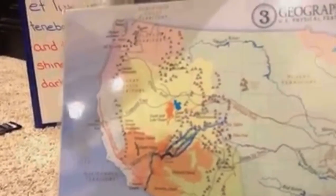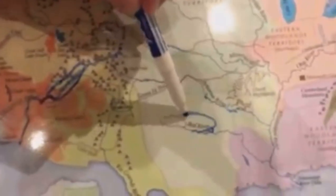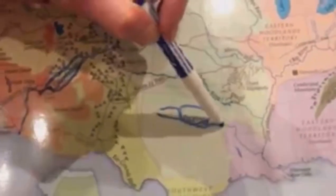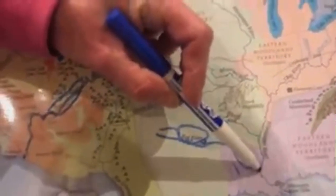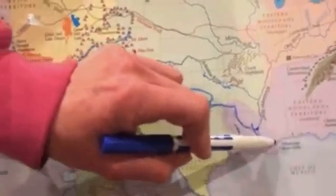Next up, we're going to find the Red River. Here is the Red River — it goes right this way down here, and it meets up at the Mississippi River. Then it goes out to the Gulf of Mexico — the Mississippi River does.